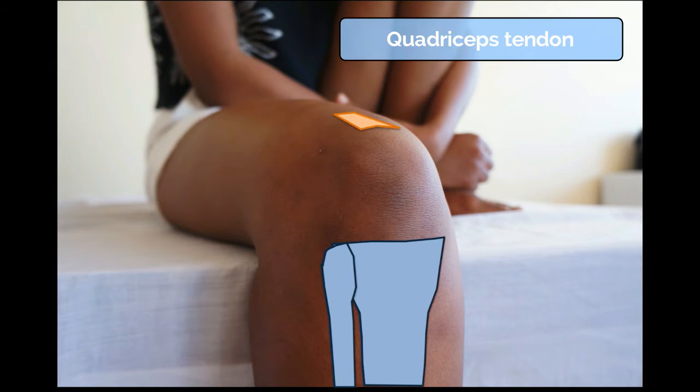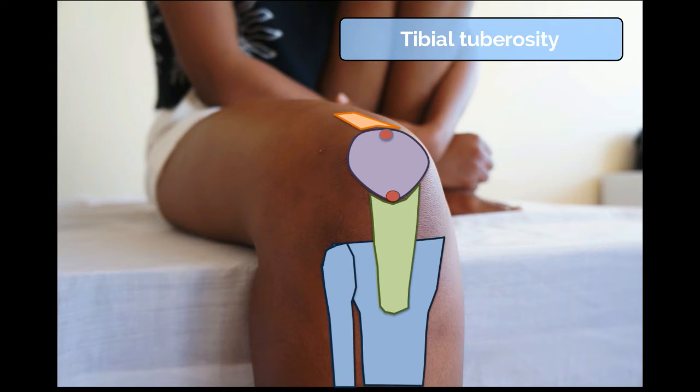The necessary landmarks of the knee joint include the quadriceps tendon, the patella — specifically its superior and inferior aspects — the patella tendon which attaches to the tibial tuberosity, and the lateral collateral ligament which attaches to the fibular head. In the demonstration, an inferior lateral patella technique will be utilized, where the injection site is located approximately one centimeter inferiorly from the inferior aspect of the patella and one centimeter laterally from this point.